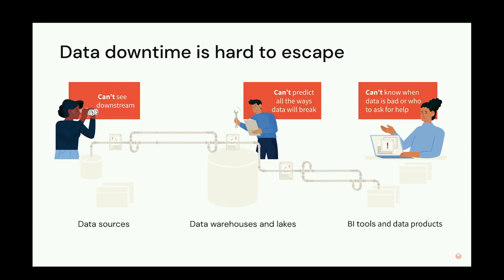A quick story from our own experience illustrates why predicting all data downtime is very challenging. We were using PySpark and had a schema change happen somewhere upstream, which caused an inner join to result in a lot less data downstream, causing a pretty severe incident. It's very hard to predict — it could be someone from a completely different team changing the data, leading to downstream impact for other teams.